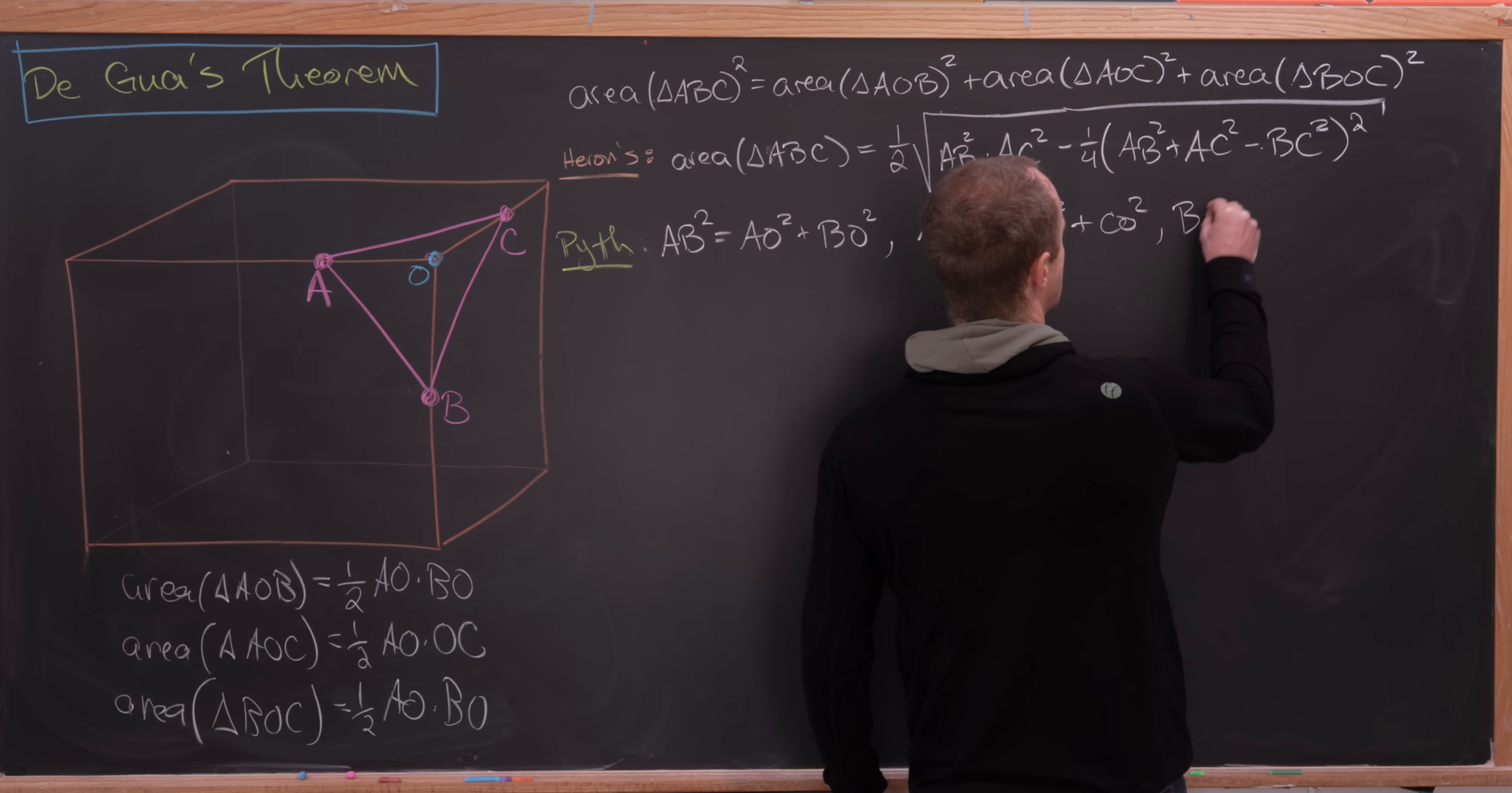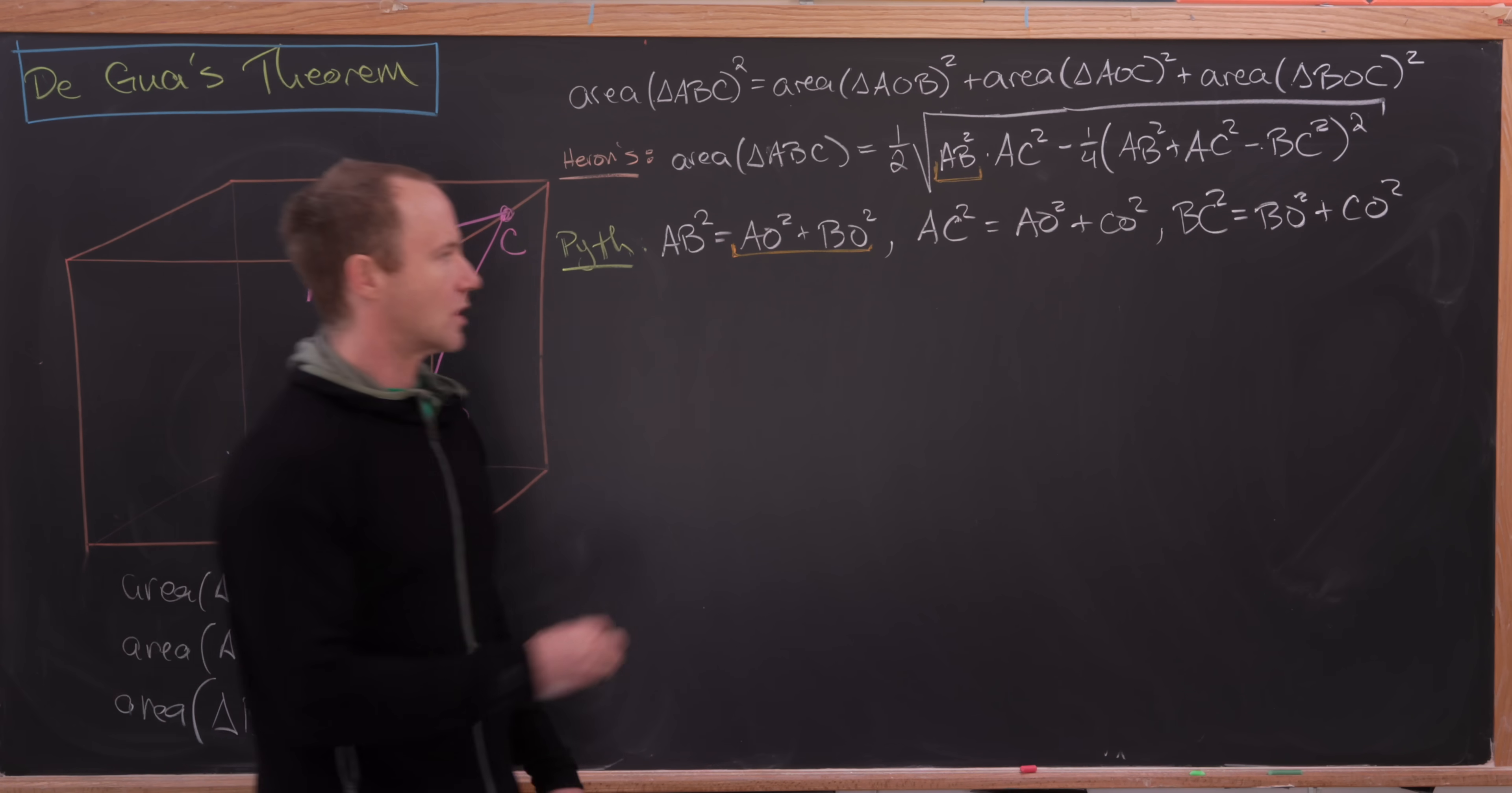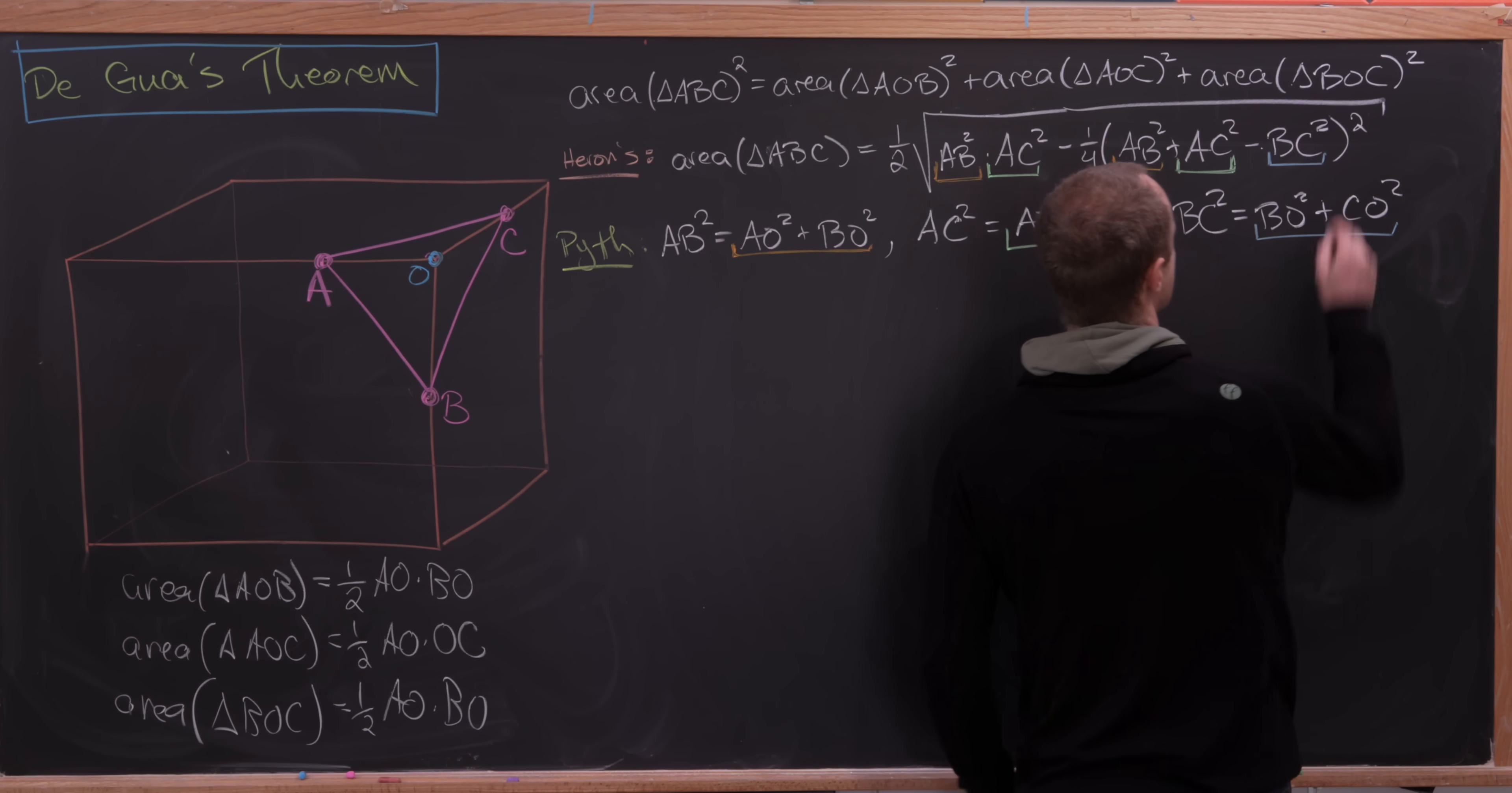And then we have BC squared is equal to BO squared plus CO squared. So we'll take each of these and put them inside of our formula that we have for the area of triangle ABC. So we'll replace AB squared with this thing that I have underlined in orange, but that appears two times up here. And then we'll replace AC squared with this stuff that I have underlined in green, so that also appears two places. And then this stuff involving BC squared only occurs one place, and that's going to be right here at the end.